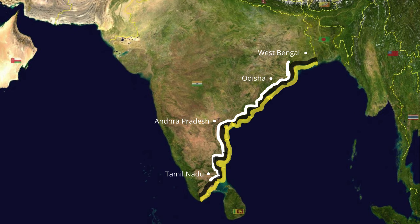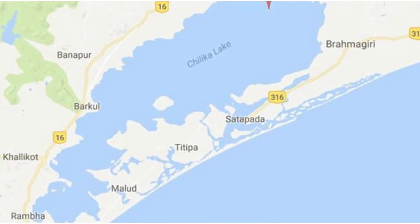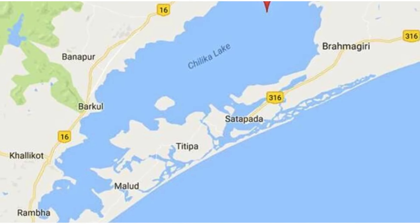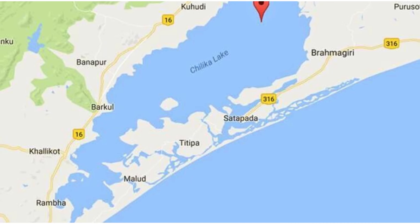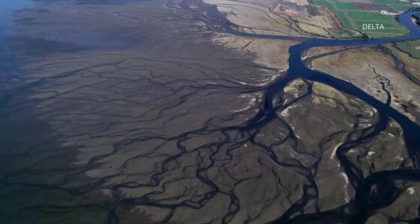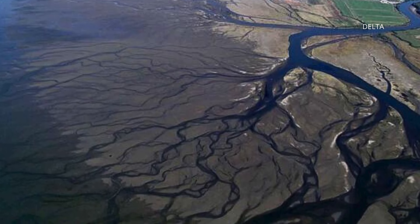The eastern coast is divided into three categories: the Utkal coast, the Andhra coast between the Mahanadi and Krishna rivers, and the Coromandal coast between the Krishna and Kaveri rivers. Chilika Lake, a brackish water body, lies in the state of Odisha and stretches to the south of the Mahanadi delta. The deltas of many rivers in India constitute a significant part of these plains.